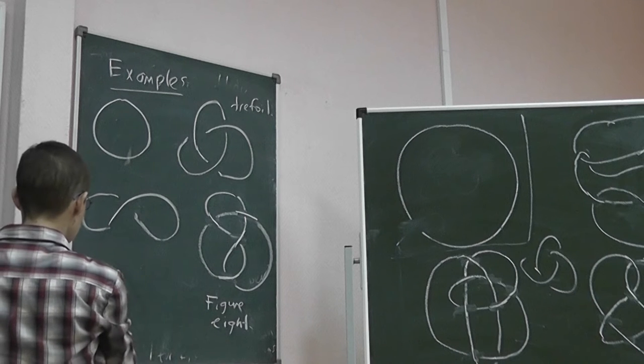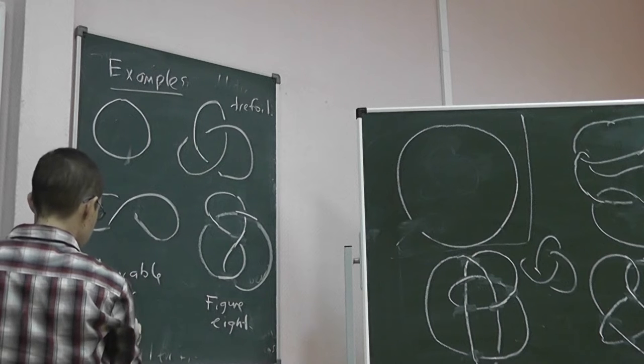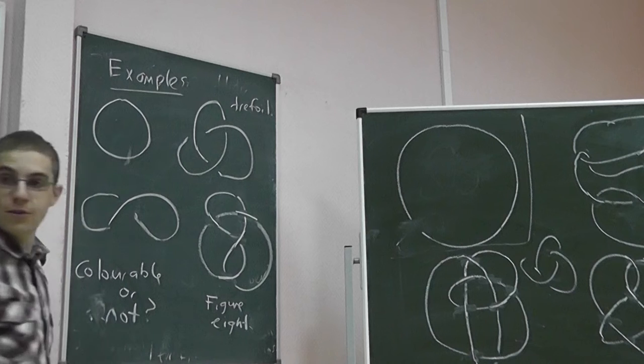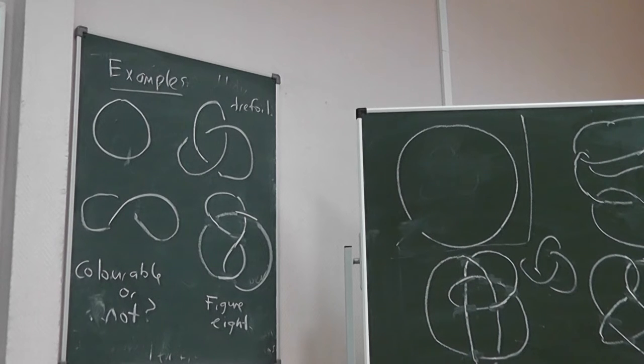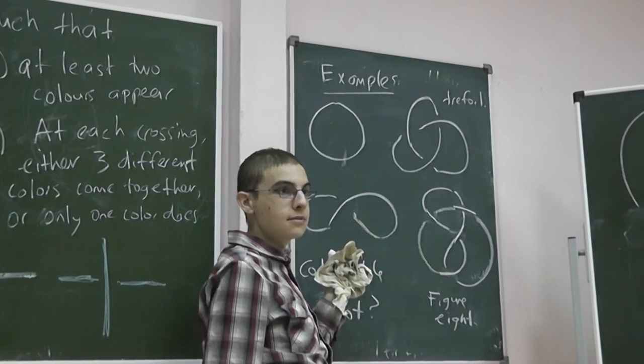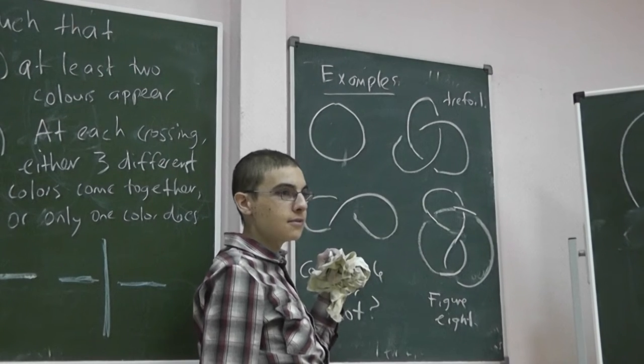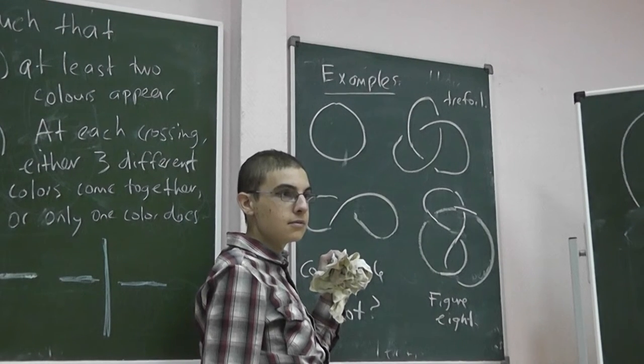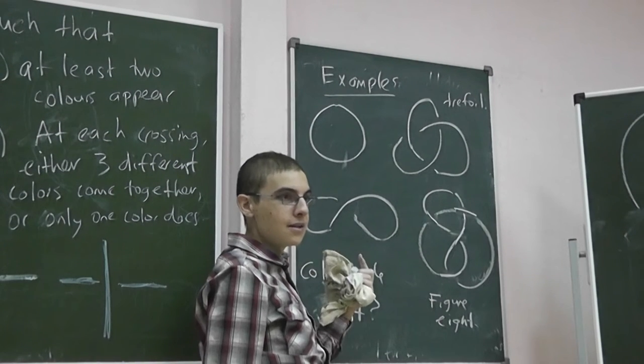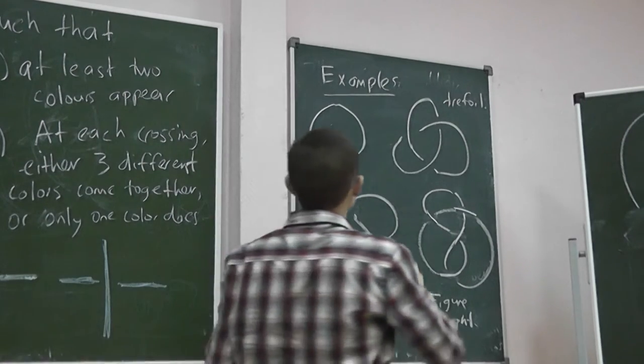Colourable or not? Colourable or not? So these are just diagrams. Is this diagram colourable? No. No. So why isn't it colourable? Because there's only one arc, or it's a circle. Okay, and I need to have at least two colours. So, not colourable.